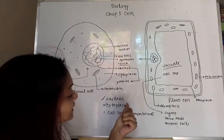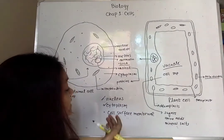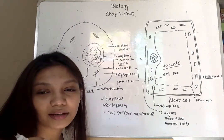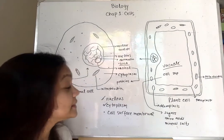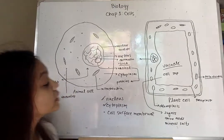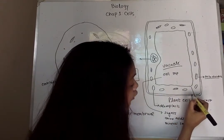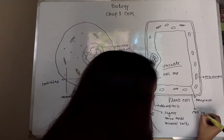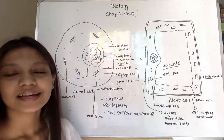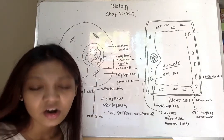We have talked about the nucleus and cytoplasm, but we have not yet talked about a very important structure called the cell surface membrane. The cytoplasm is surrounded by the cell surface membrane, also known as the plasma membrane. It is a partially permeable membrane which controls substances entering or leaving the cell.